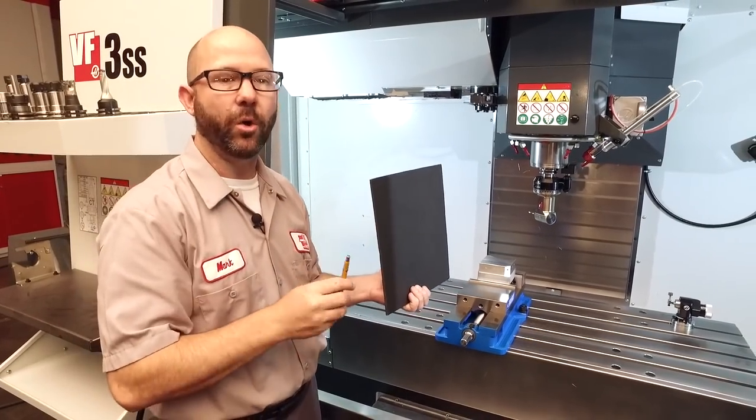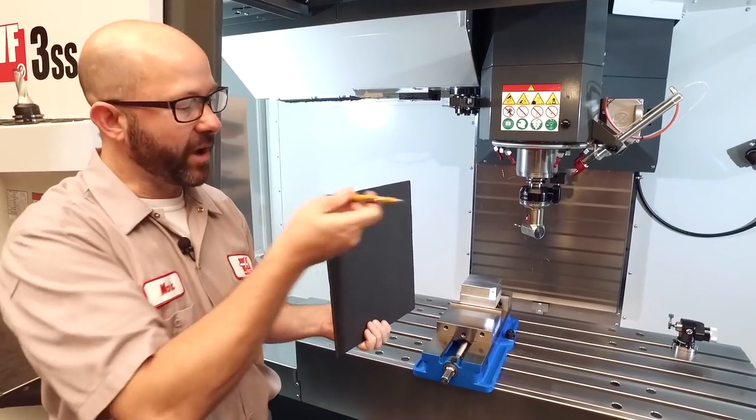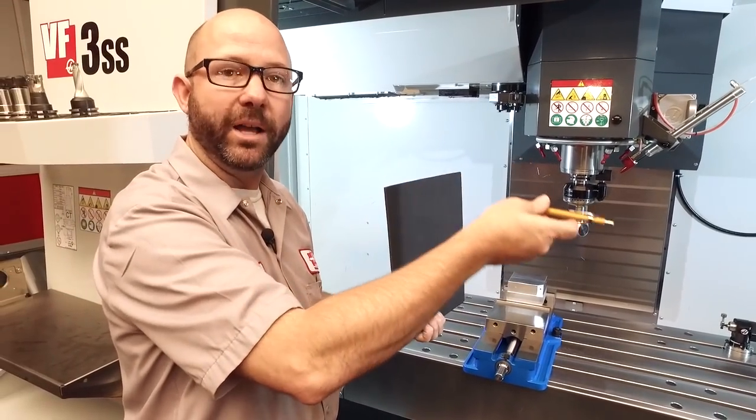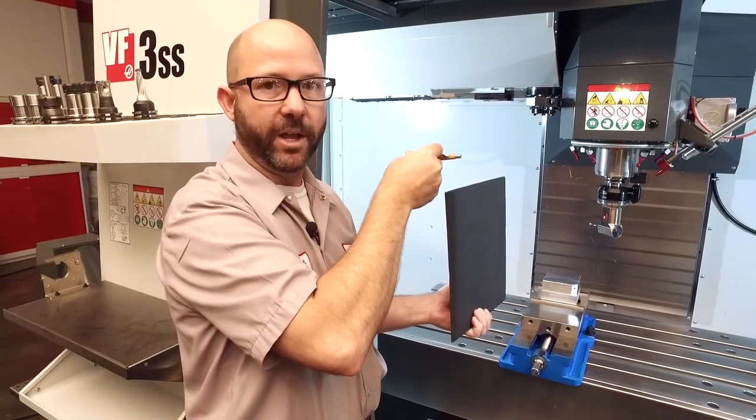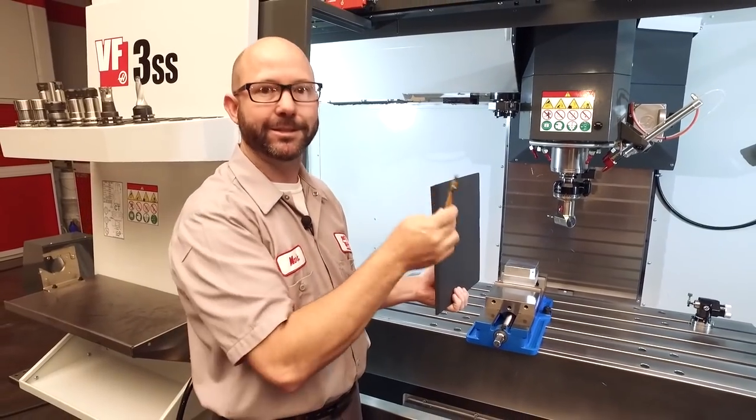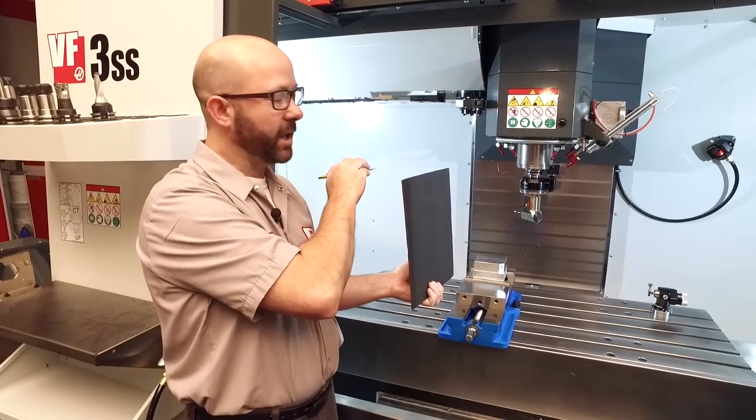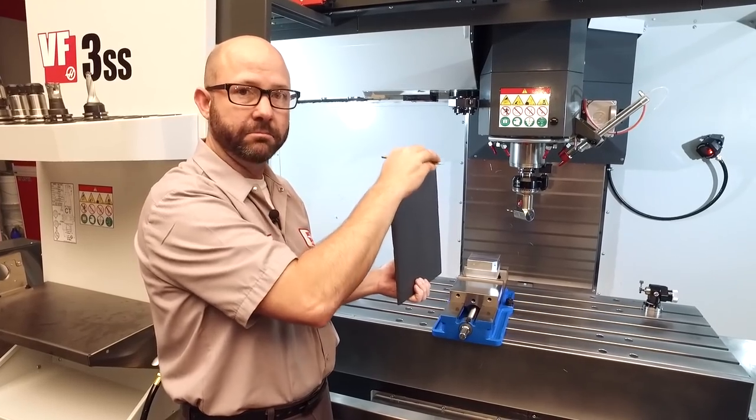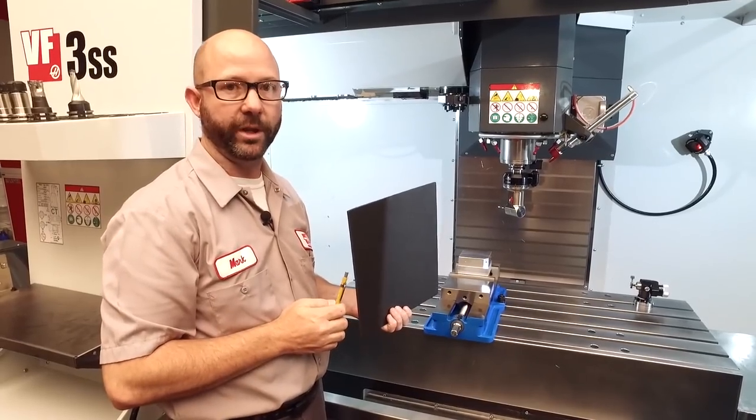Now, how does the control know which direction I'm coming from? Well, it doesn't really care. If I start from a positive X value and move towards a minus X value, it knows which direction I'm moving from. It knows that I'm drilling or tapping to the left. If I start from a X minus direction and move towards an X plus direction, it knows that I'm drilling or tapping to the right and it's going to adjust my clearance planes accordingly.